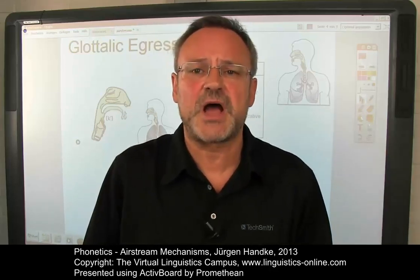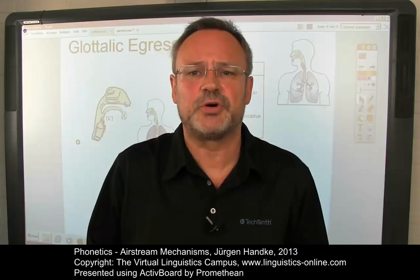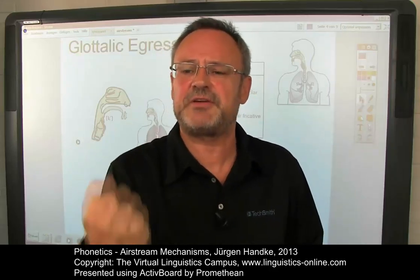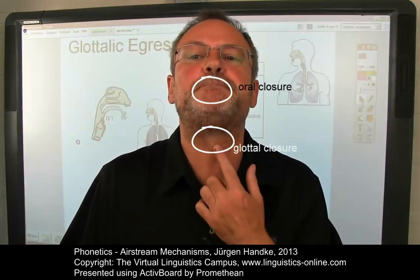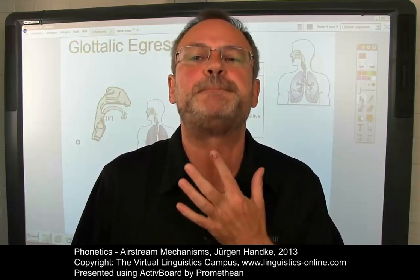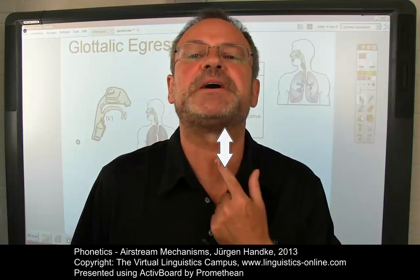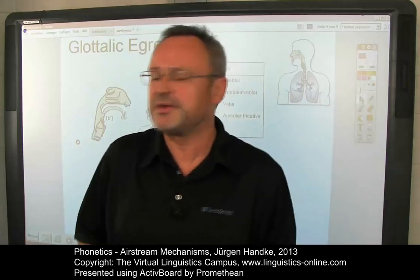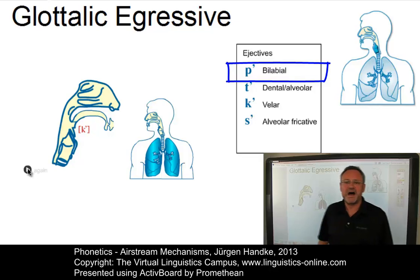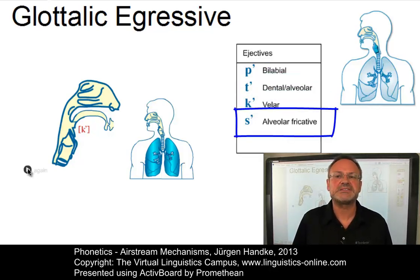Then we have to produce a supraglottal or oral closure — that is, a closure somewhere in the vocal tract, let's say a bilabial closure. Now, combining these two closures: while you have the two closures, pull the larynx up about one centimeter. It acts like a piston compressing the air in the pharynx. The compressed air is released by releasing the oral closure while the glottal closure is maintained. The result is an ejective consonant, a speech sound similar to a plosive. Here are some ejectives: p'a, t'a, k'a, t'a.